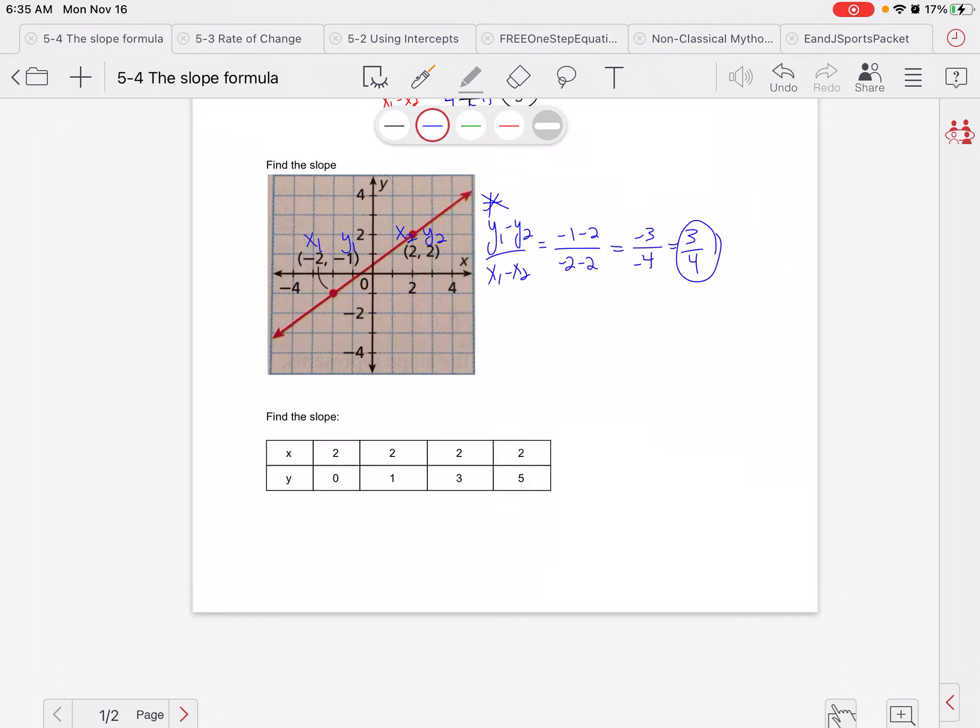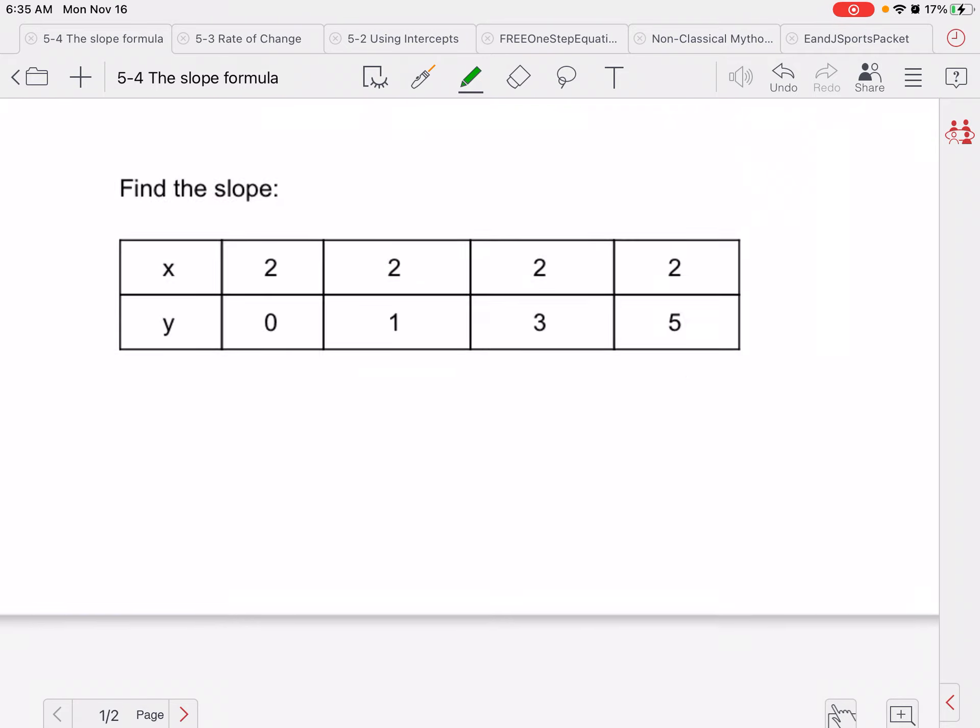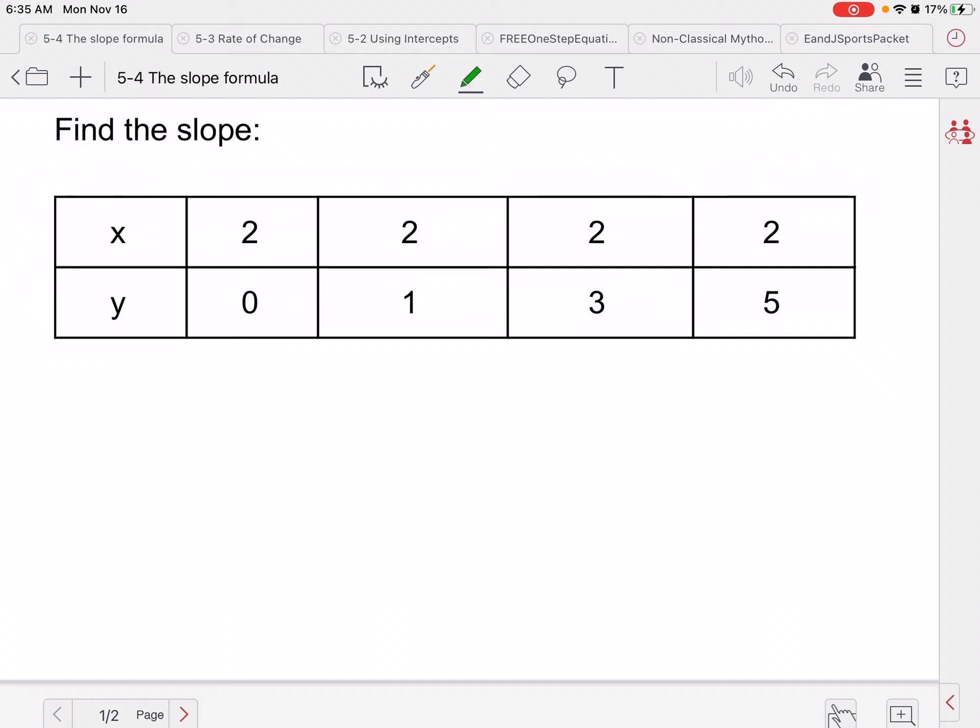So we're just plugging and chugging away. If you are given a table, pick two of the points. It doesn't really matter what two. So I could pick the second and fourth one. So this would be x1, y1, x2, y2. So again, my formula is y1 minus y2 over x1 minus x2. And again, if we keep writing that and saying it, it'll be memorized fairly quickly.